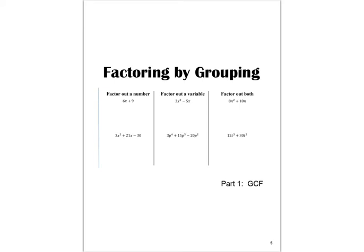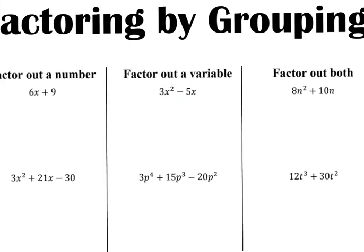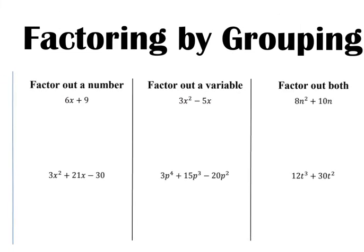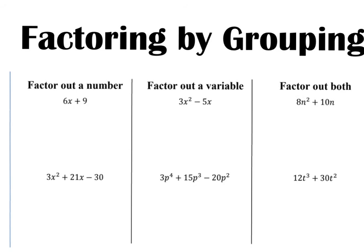On the first page we're just factoring by trying to find the greatest common factor we can remove. If I take a look at my first one, we've got 6x plus 9. I know that both of these are divisible by 3, so I'm going to put that out front and divide each piece by 3. 6 divided by 3 is 2, I still have an x, and 9 divided by 3 is 3. At this point that problem is done.